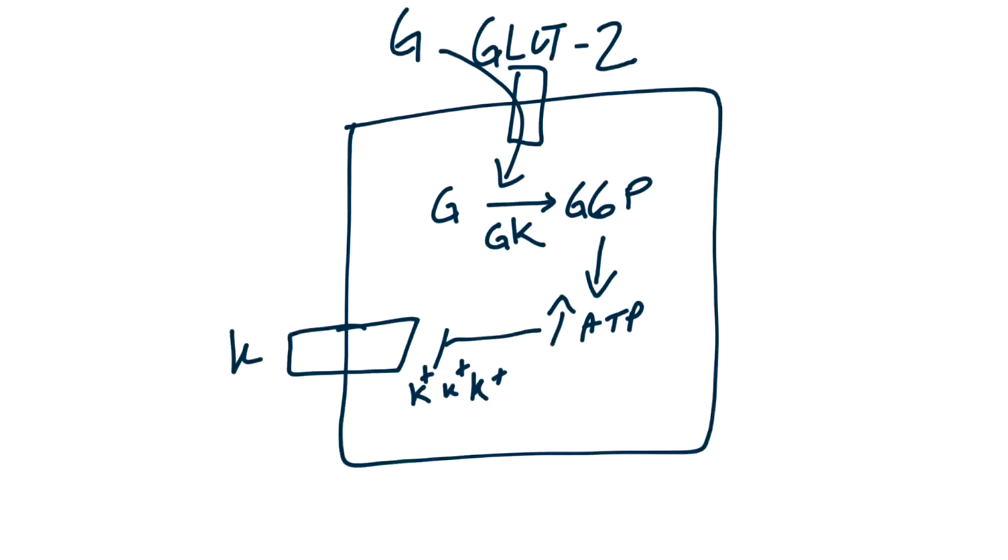Depolarization results in voltage-gated calcium channels to open. Calcium begins to rush in. As calcium accumulates, it causes exocytosis of insulin and C-peptide vesicles, which are just prepackaged and ready to be released into the blood.